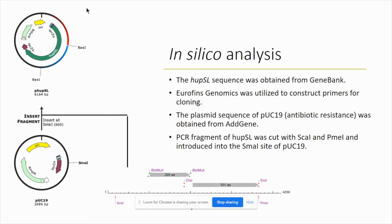For the in silico analysis, we obtained the Hup-SL sequence of Anabaena variabilis from PubMed's gene bank. In order to clone this DNA fragment, we analyzed the sequence for the purpose of finding suitable primers for the polymerase chain reaction.